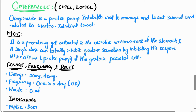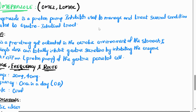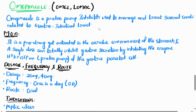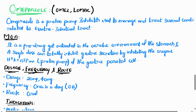We explain omeprazole. It is used to manage and treat several conditions related to the gastrointestinal tract. Omeprazole is a pro-drug; it is activated in the acidic environment of the stomach. A single dose can totally inhibit gastric secretion by inhibiting the enzyme H+/K+ ATPase of the gastric parietal cell.